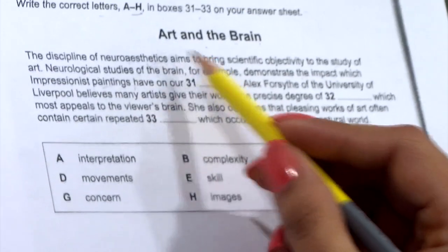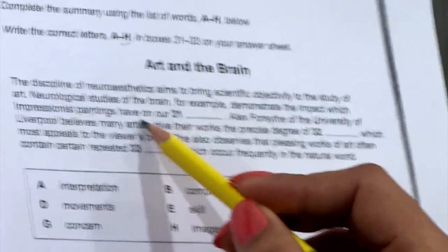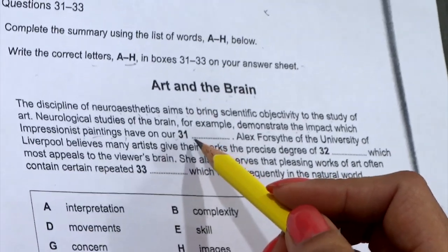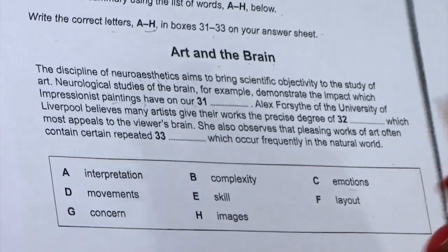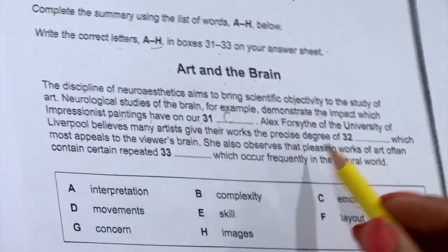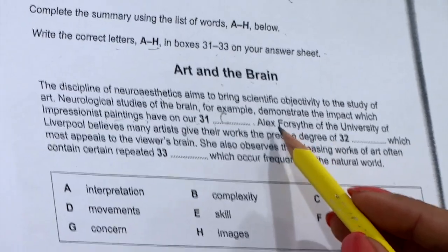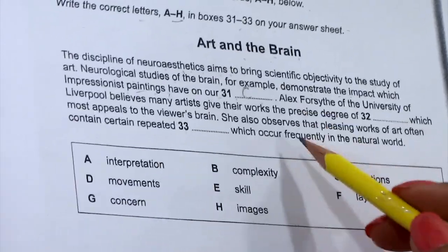If we go to the same location in the question, they are talking about neurological studies of the brain — for example, demonstrate the impact which impressionist paintings have on art [gap]. That means there cannot be 'interpretation' or 'complexity', but 'emotions', because they are talking about feelings. So the answer will be 'emotions' for question 31 — and what we are going to write is the letter, not the word 'emotions'. The other options — movement, skill, layout, concern, images — are not applicable. So we have got the right answer.